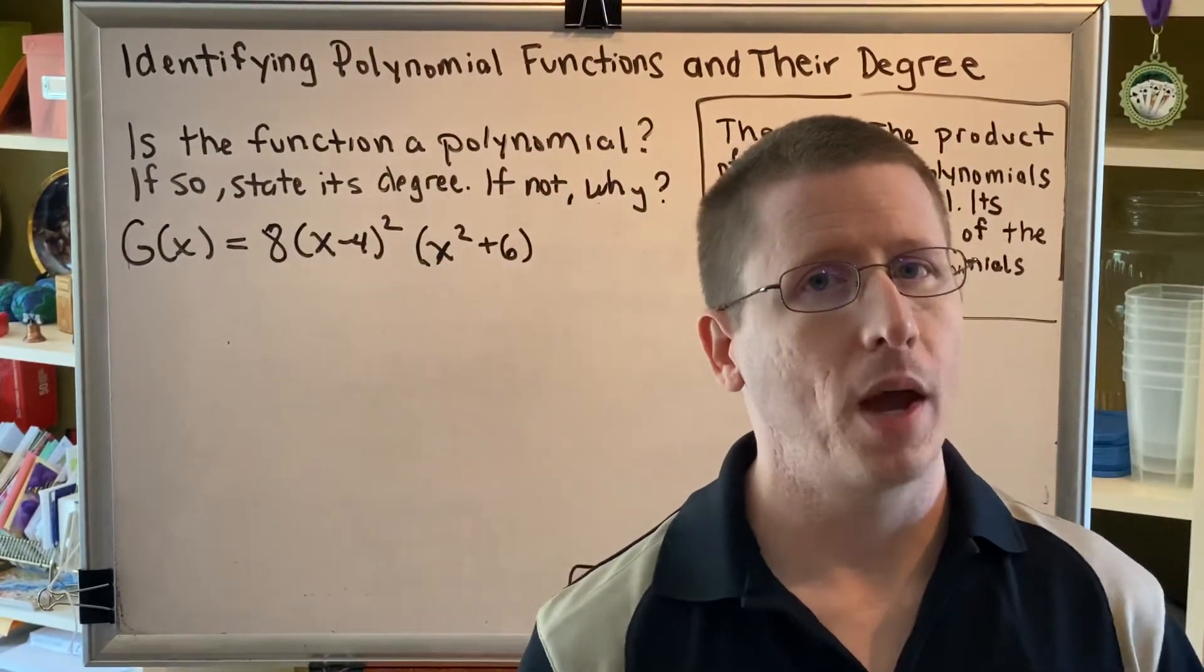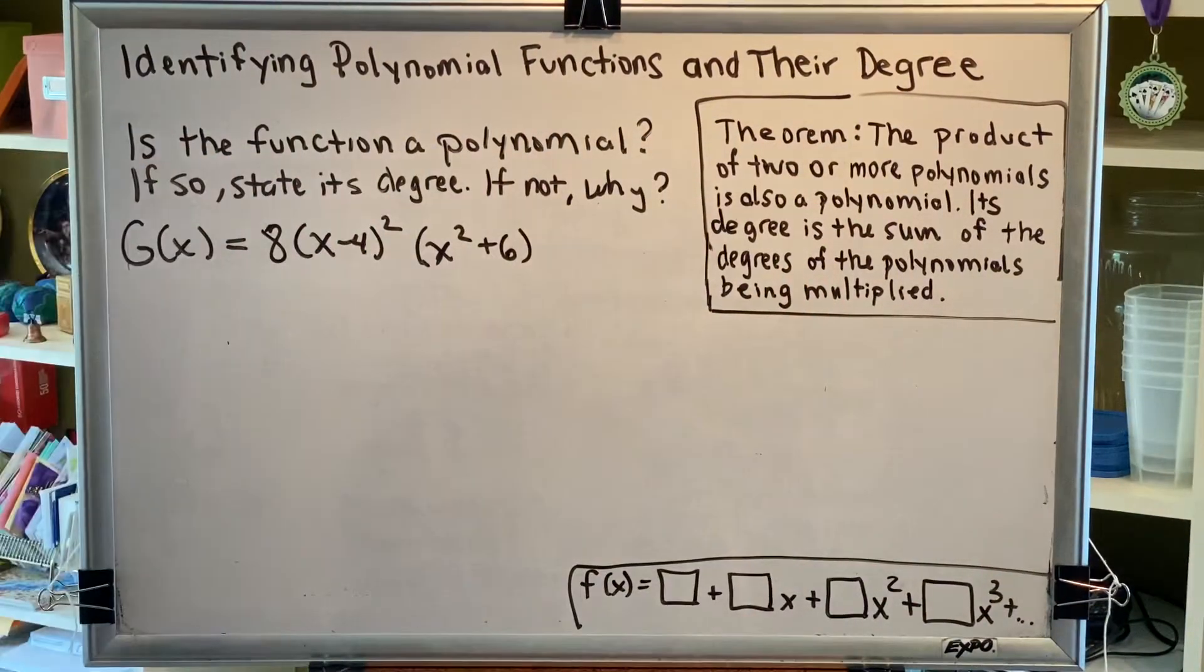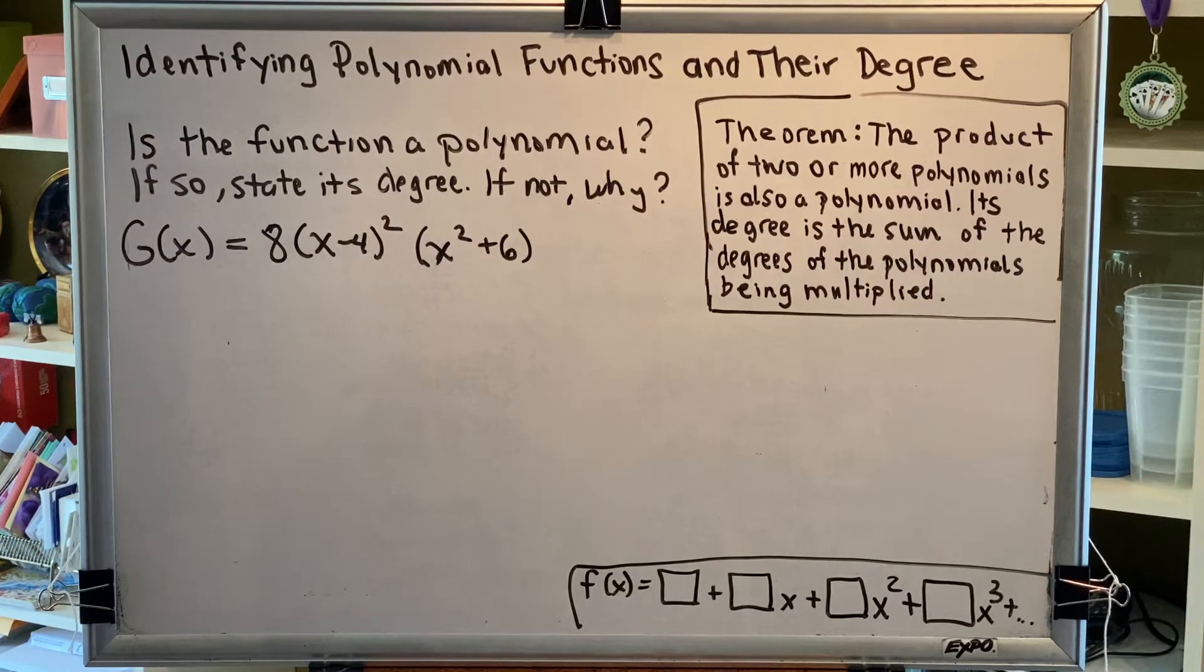A much easier and simpler way to approach this problem is to use this theorem. Let's read it. The product of two or more polynomials is also a polynomial. Its degree is the sum of the degrees of the polynomials being multiplied.